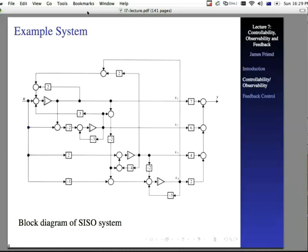Here's an example system, a block diagram of a single-input, single-output system. The input at left is U. The output at right is Y. And if you look,